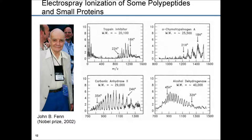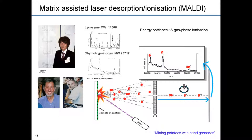Approximately simultaneously, matrix-assisted laser desorption ionization was discovered first by Koichi Tanaka and then greatly improved by Karas and Hillenkamp. Koichi started using a metal matrix, and then Karas and Hillenkamp discovered organic matrices which were much better at absorbing light and transferring protons to the analytes. Breakthrough came with the discovery of the possibility of ionizing very heavy proteins. Some of them could also be multiply charged, but generally we get predominantly singly charged ions in MALDI. And those who like electrospray don't like MALDI — calling it 'mining potatoes with hand grenades' — just to show how inefficient the process is.